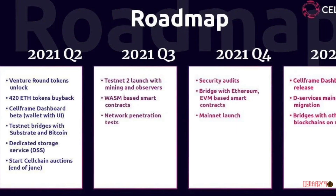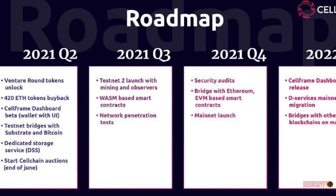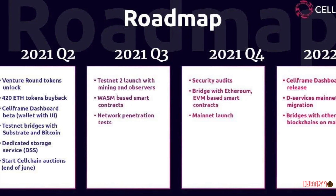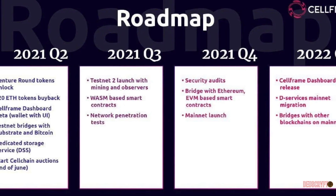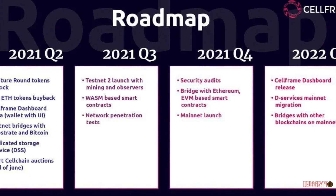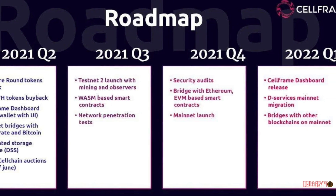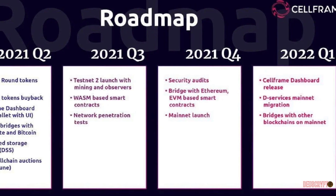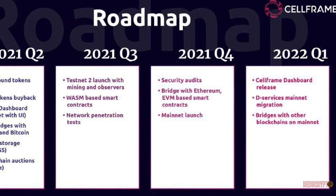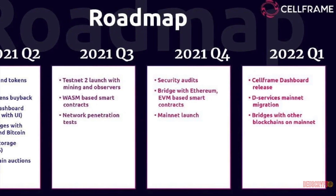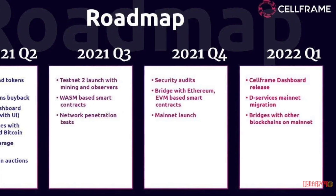Taking a look at the CELLFRAME roadmap, we can see the upcoming launch of the mainnet, followed by native auctions, emission for validators, a second stage audit, a bi-directional bridge, WASM smart contracts, an interoperability protocol, bridging with other blockchains, the CELLVERSE engine, and an EVM-compatible service.